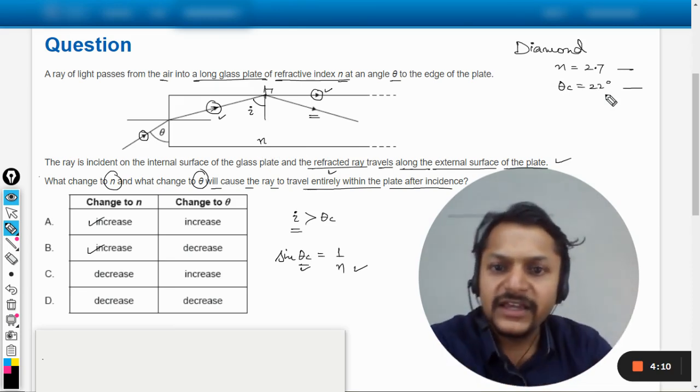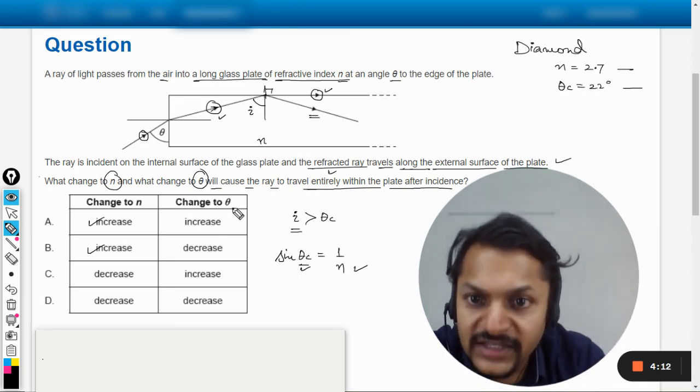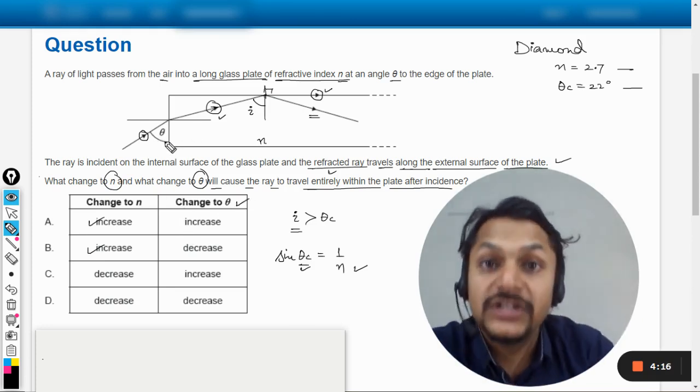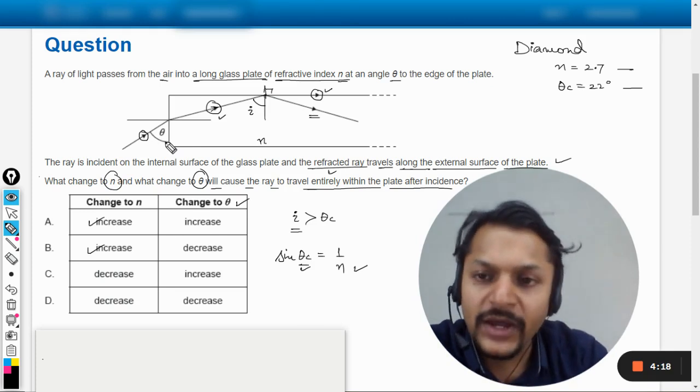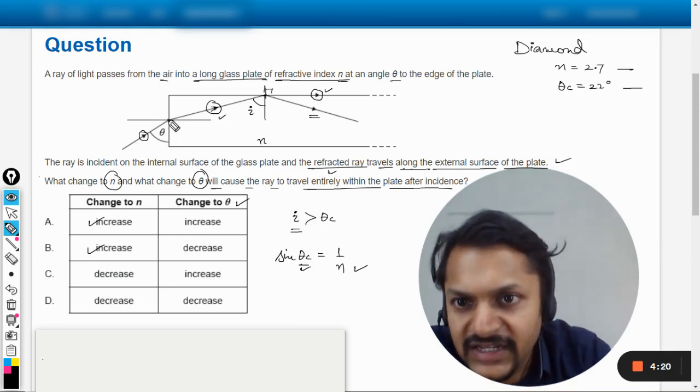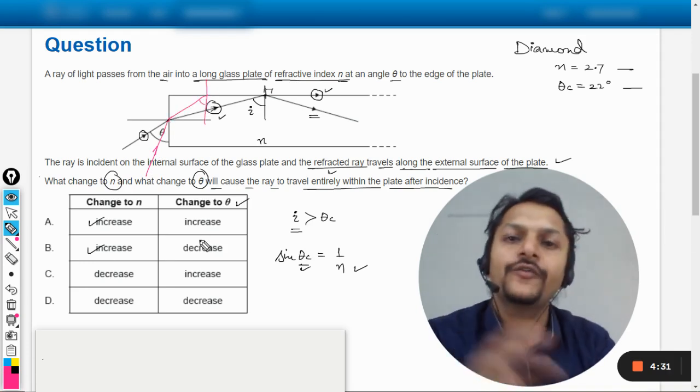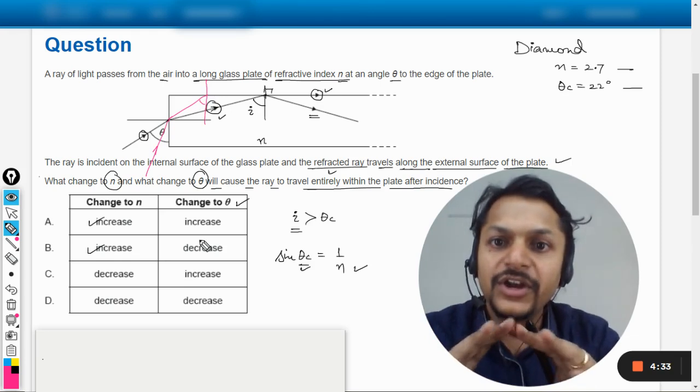Now the second thing is changes to theta. So is there any possible change to theta that we can bring in? Yes, of course, why not? So if this theta is, let us say, reduced, I'm using the other color now. Let us say theta is reduced and it goes here, so this will go like this, and you see, this angle of incidence has reduced.